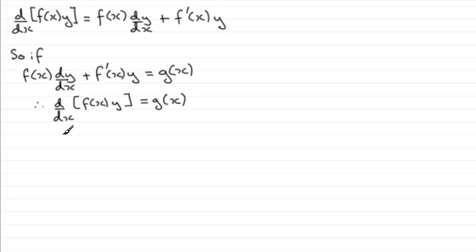Now, if I integrate both sides with respect to x, then this side is just going to go to f(x) times y, and the right-hand side would be just simply the integral of g(x) with respect to x. So if we have something like this, and assuming that we can integrate this very easily, then we can get a solution to our differential equation.